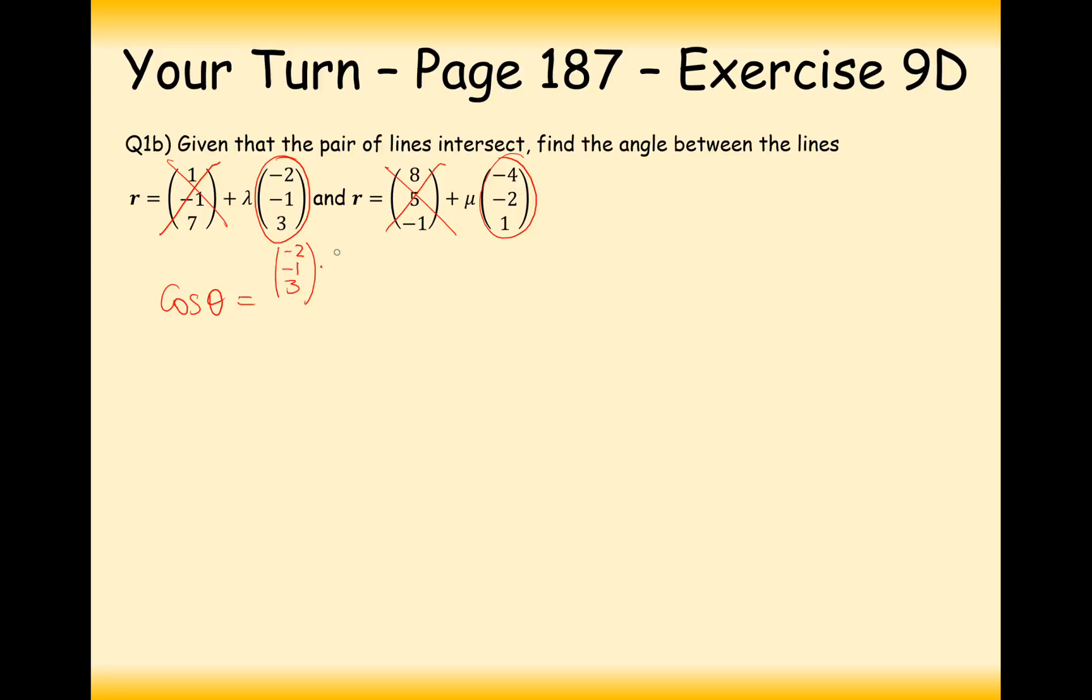So minus 2, minus 1, 3 dotted with minus 4, minus 2, 1, divided by square root of 4 plus 1 is 5 plus 9 is 14, times by the square root of 16 plus 4 is 20, 21. So I found the modulus of those two vectors in these square roots here.